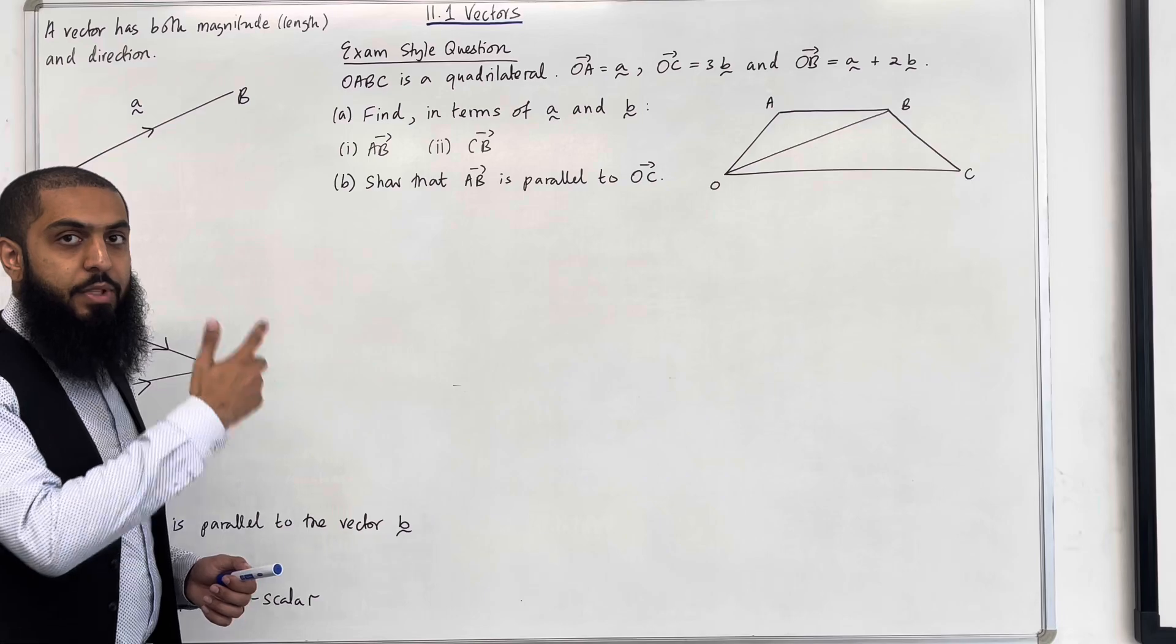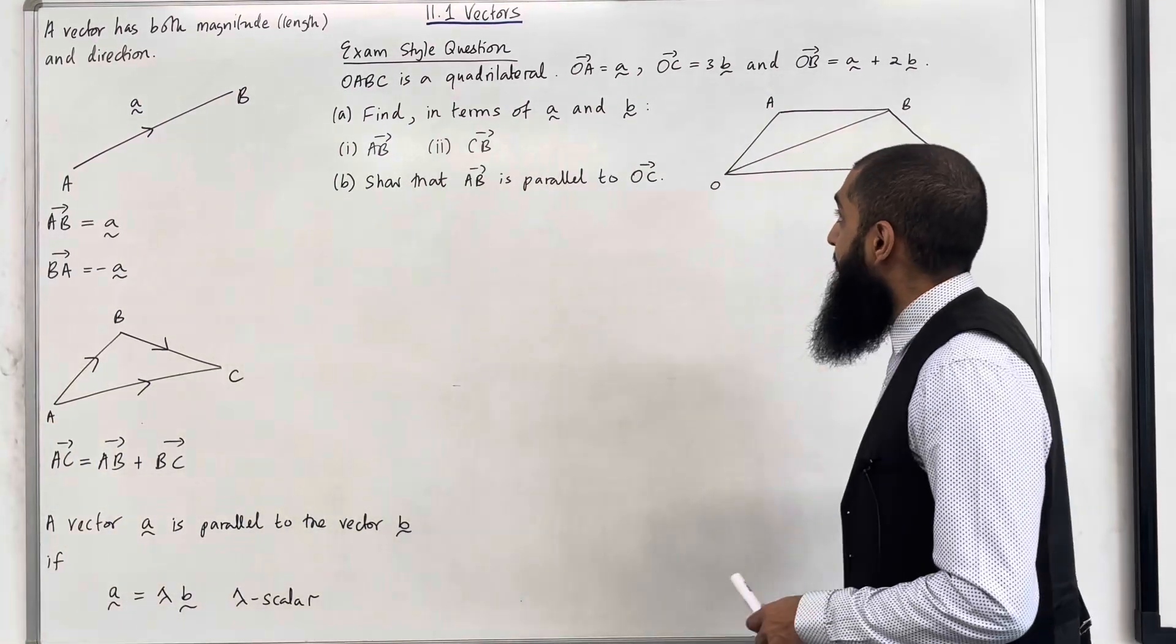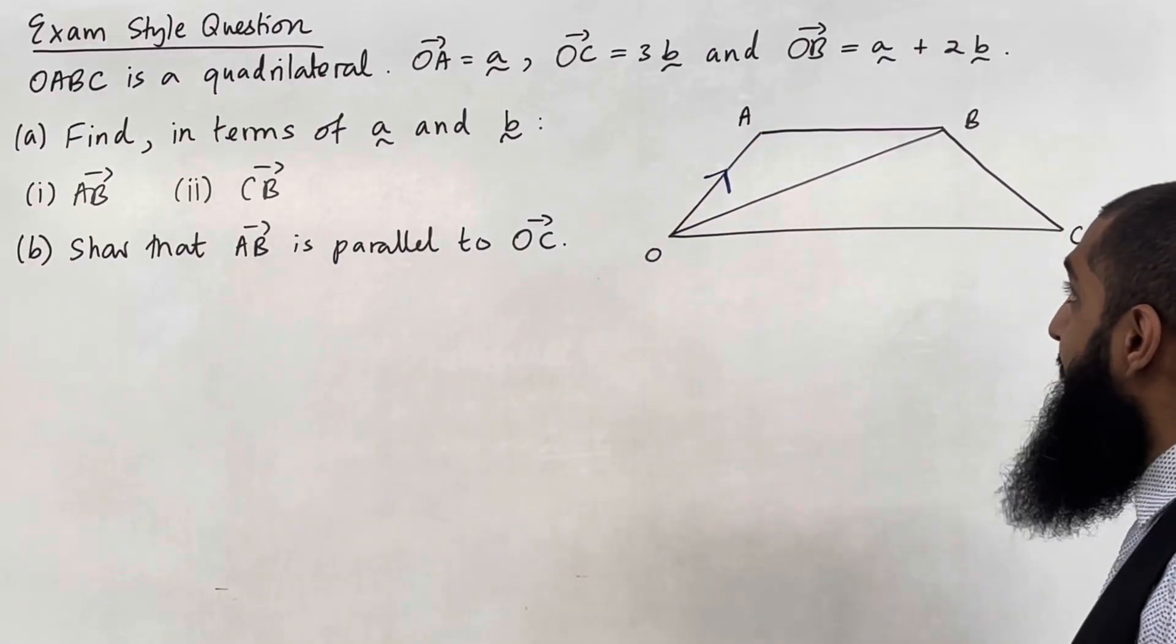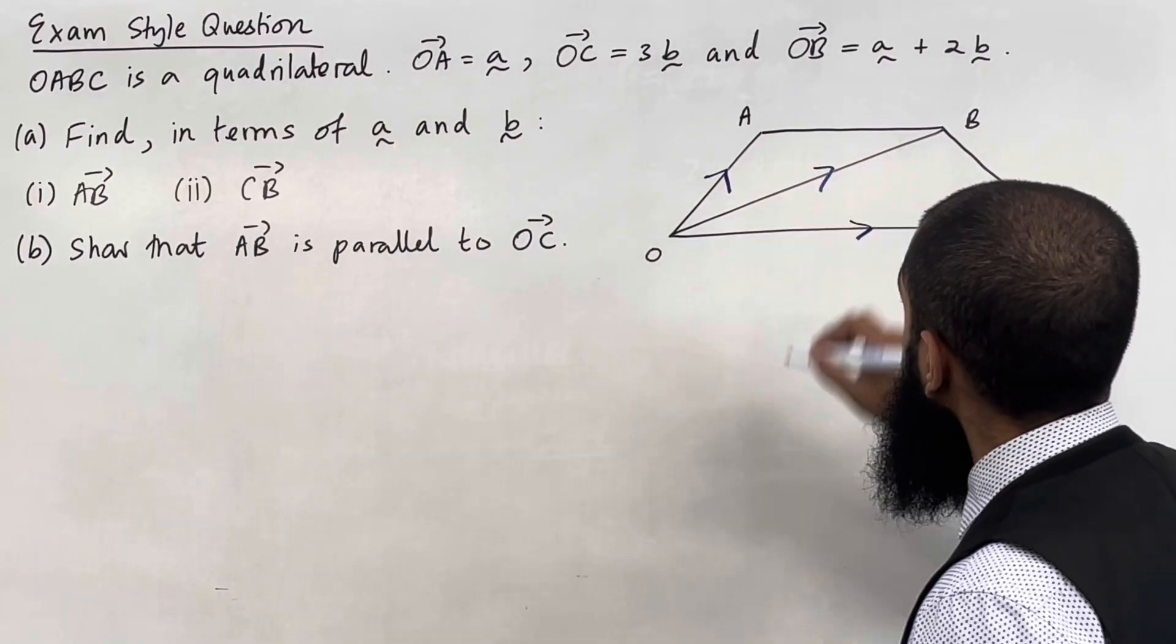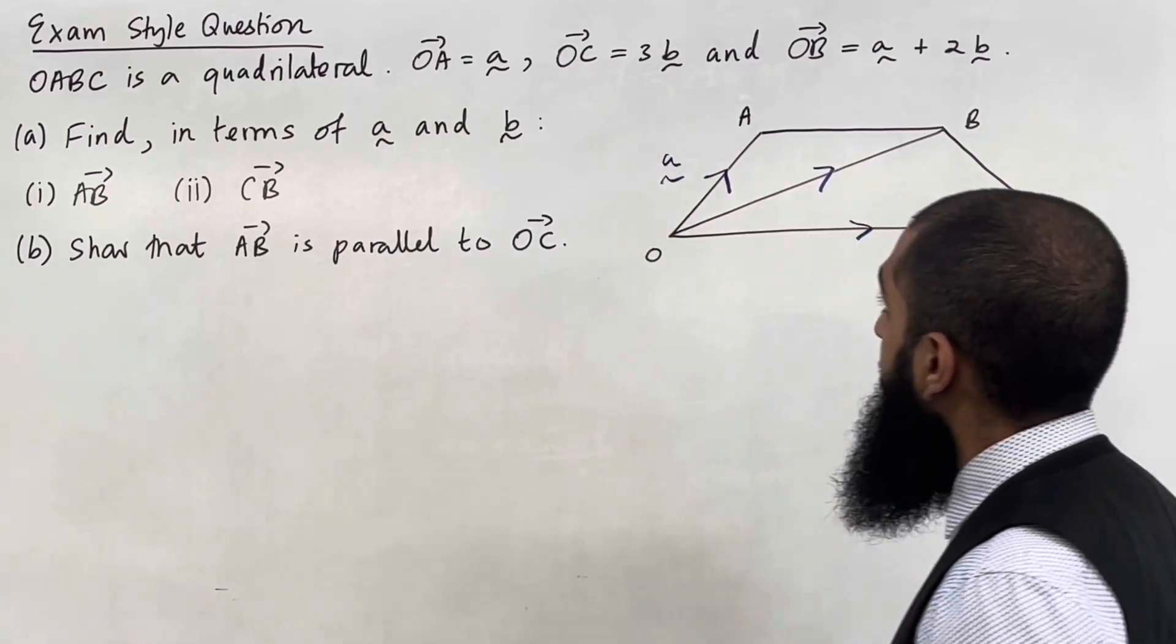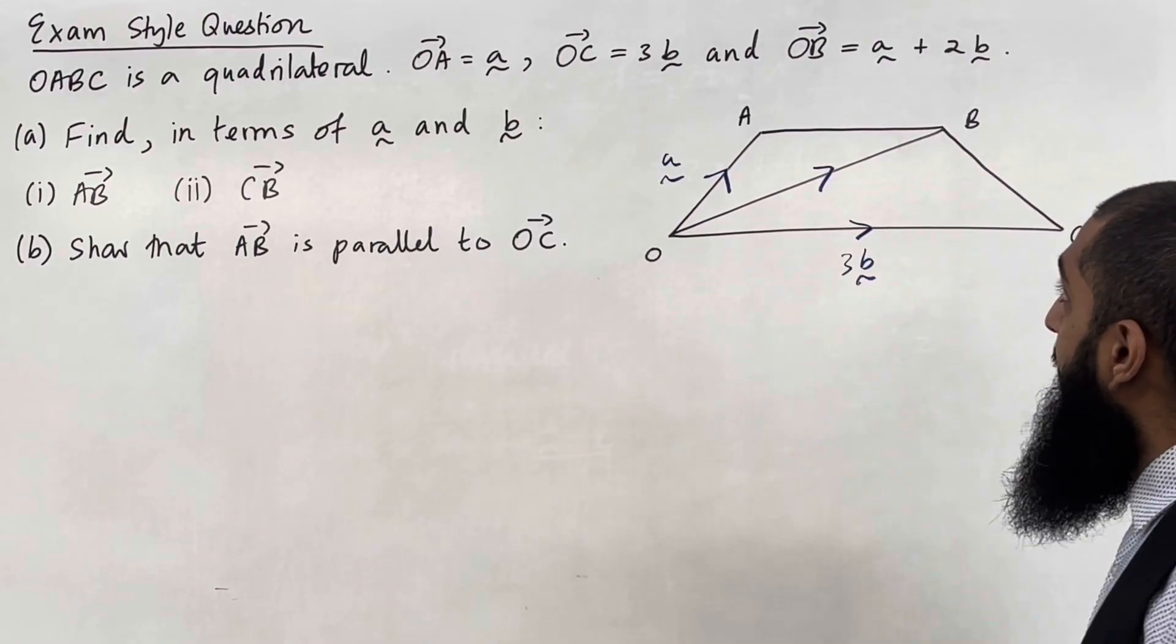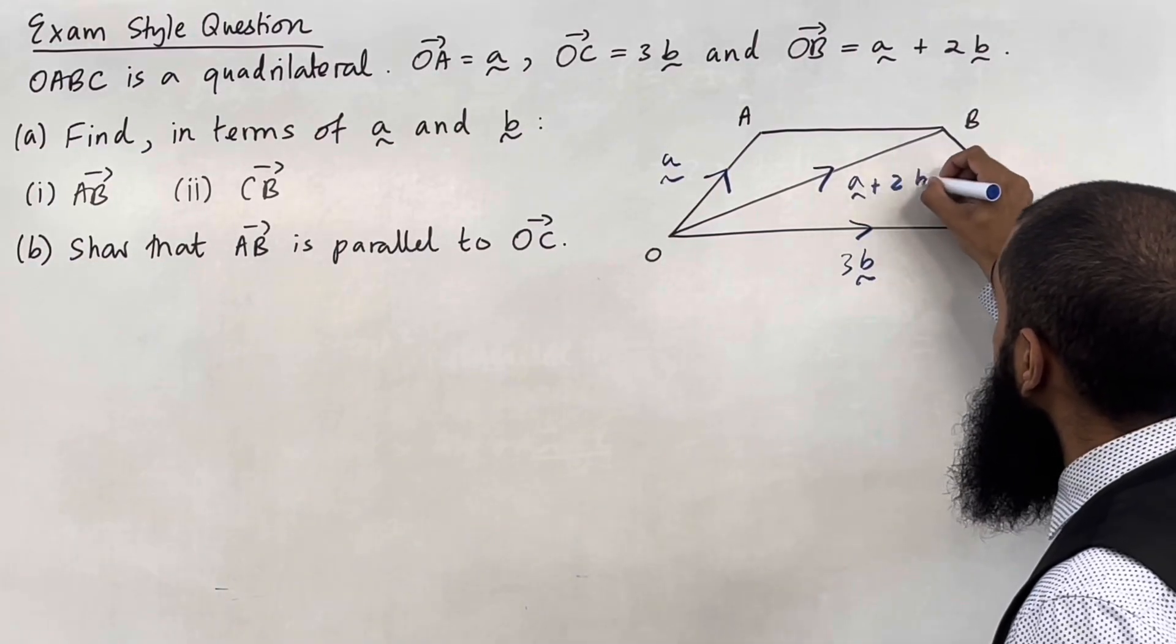Firstly, I'm going to label the directions on the diagram. So what we have here is the vector O to A. So here's my direction. Then we have the vector O to C. Then we have the vector O to B. Okay, so O to A is the vector A squiggle. O to C is the vector 3B squiggle. And O to B is the vector A squiggle plus 2B squiggle.